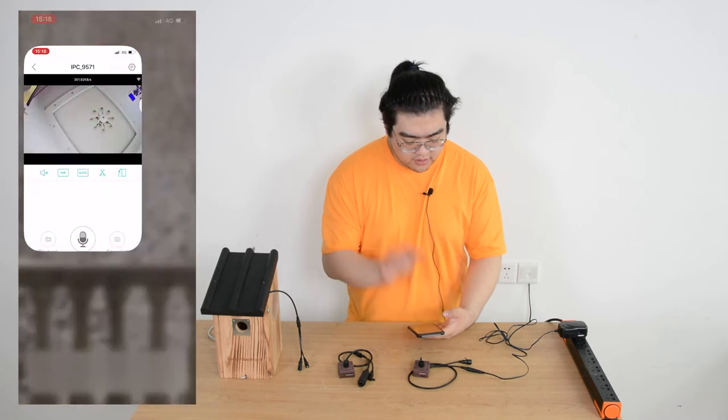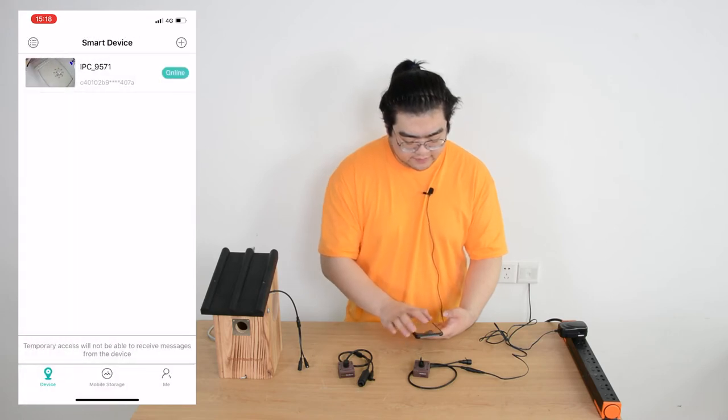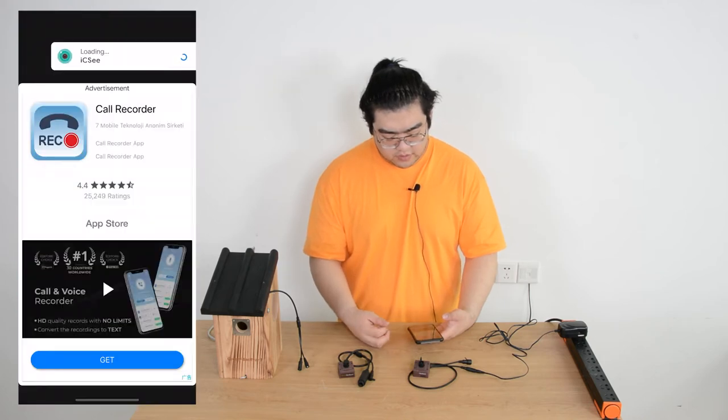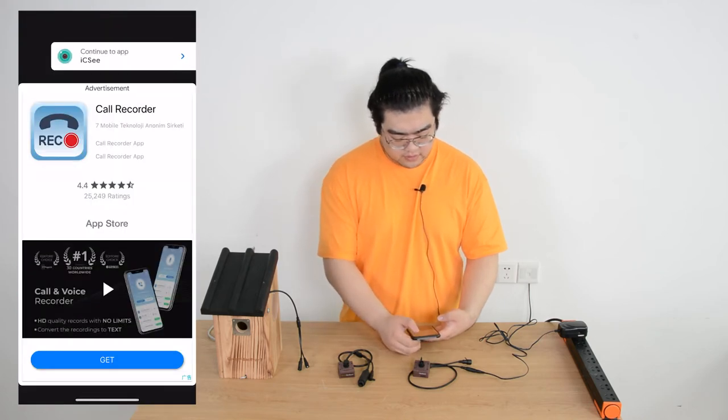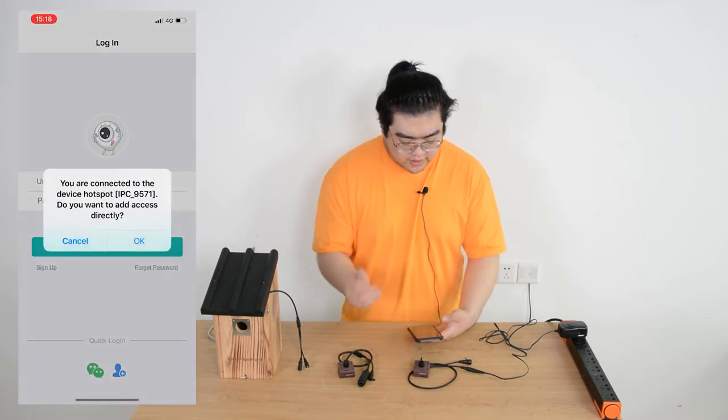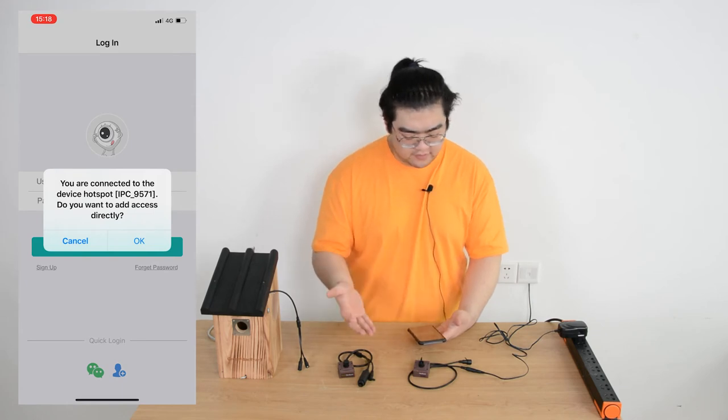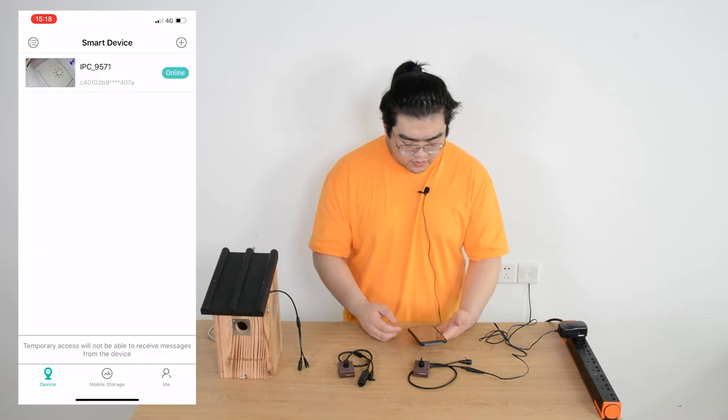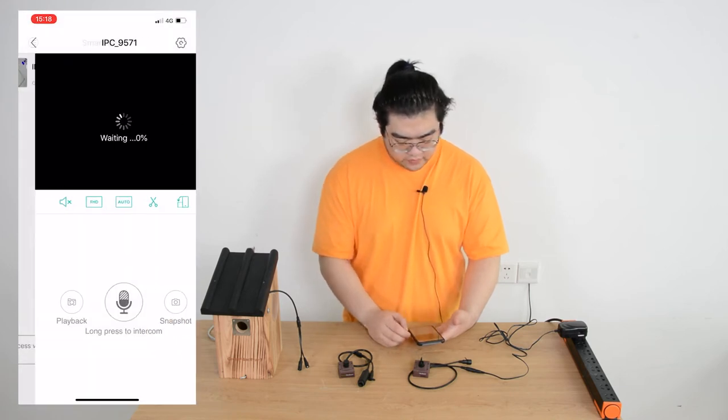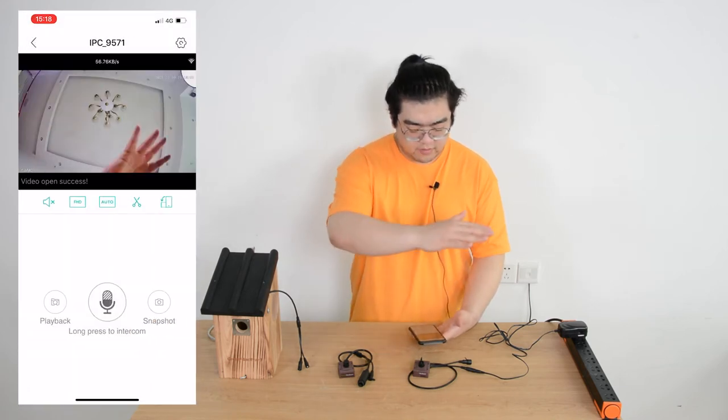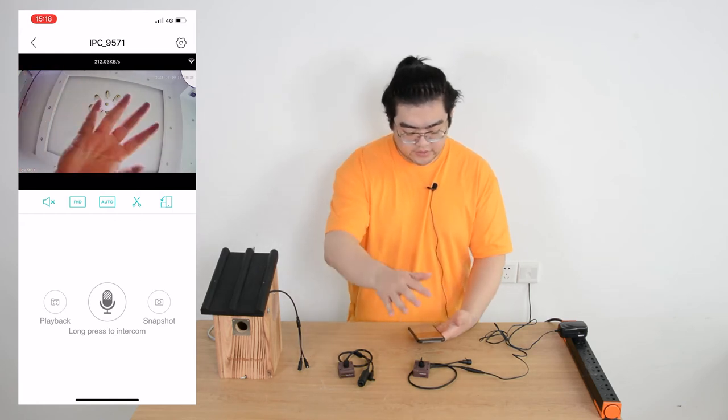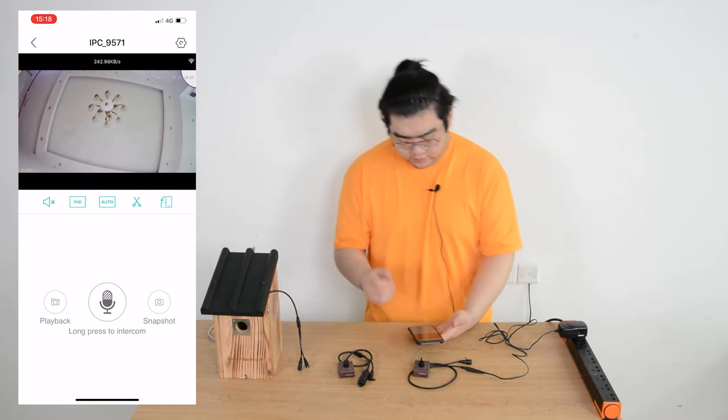Let's go to our mobile app, ICC, turn on, open our app and now it shows us we are connected to the device hotspot. Now they want to access it directly and we go, yes. And then, you can see we have image, we have visual on our camera. So now we are sure that is a working camera.